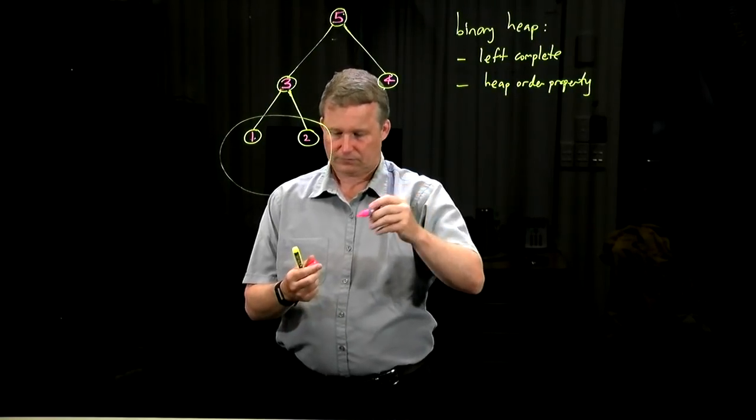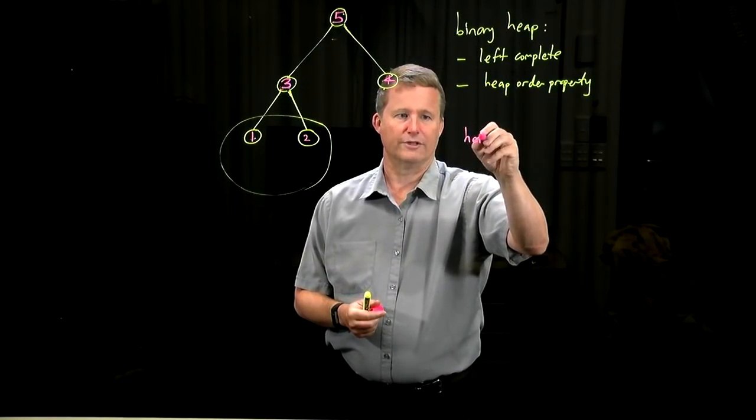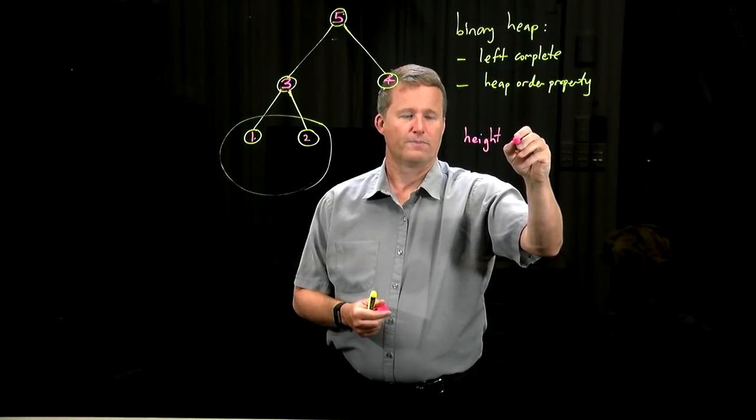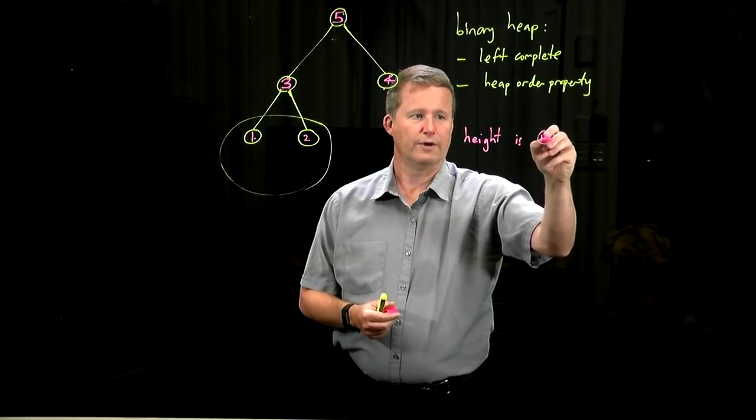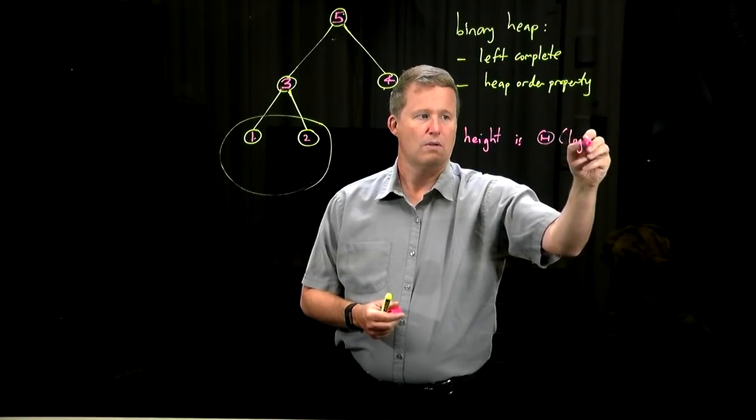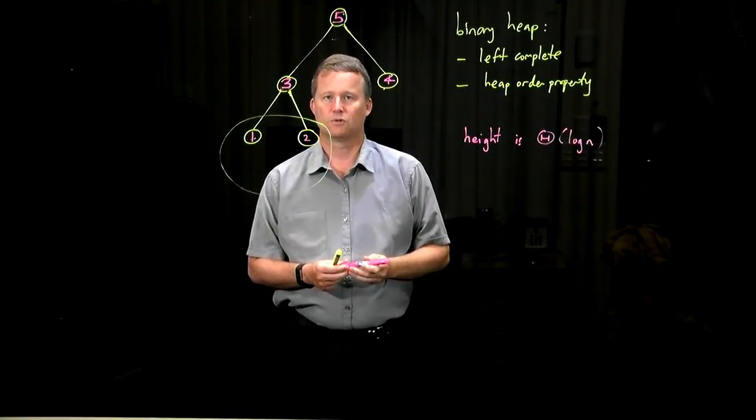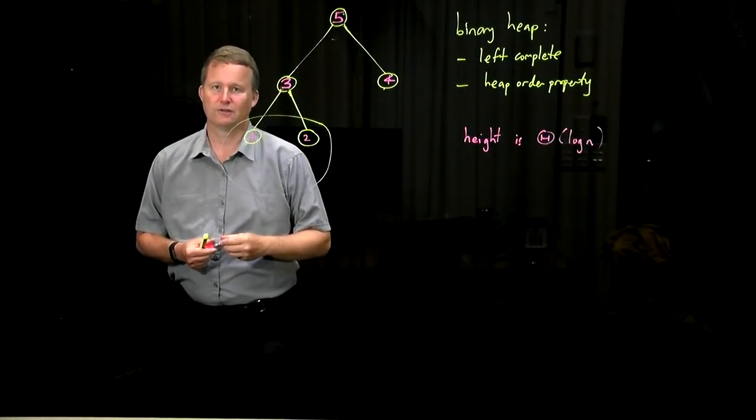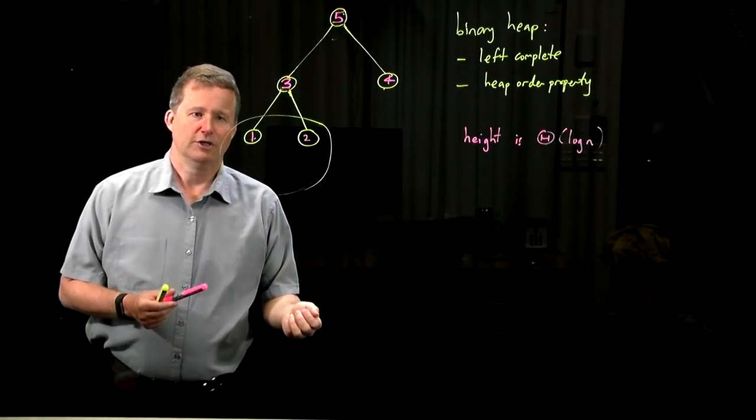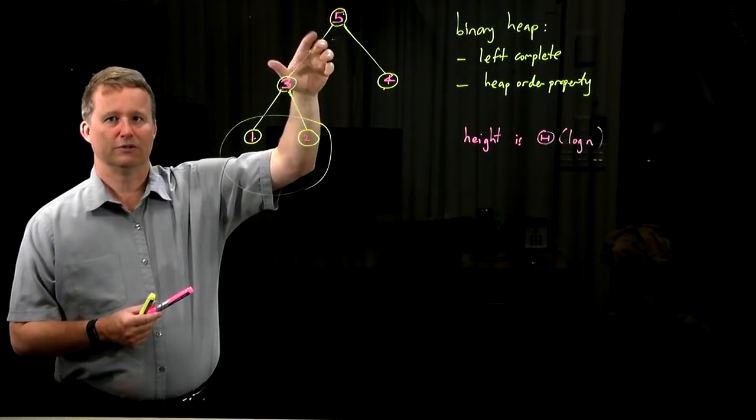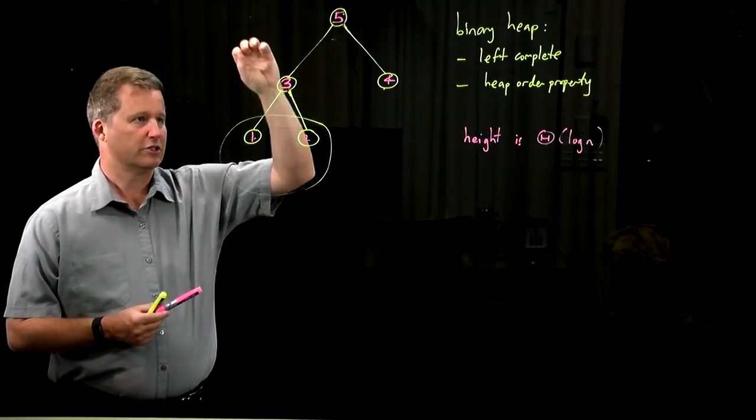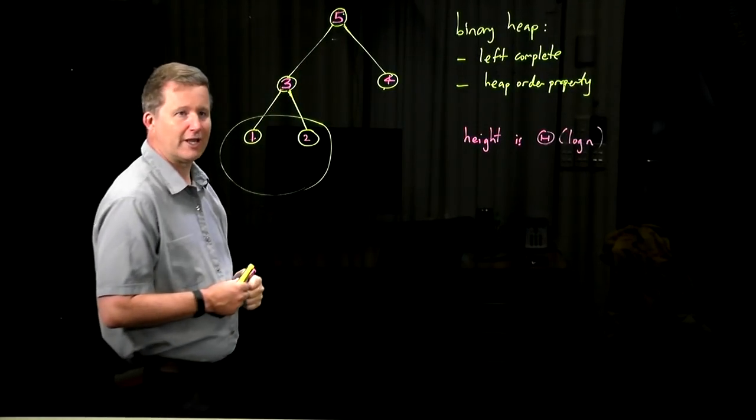So the height of this tree is order log n. Very close to the binary log n, in fact. And so that's the amount of work we have to do in these swaps. So the deletion process can be done in order log n time.